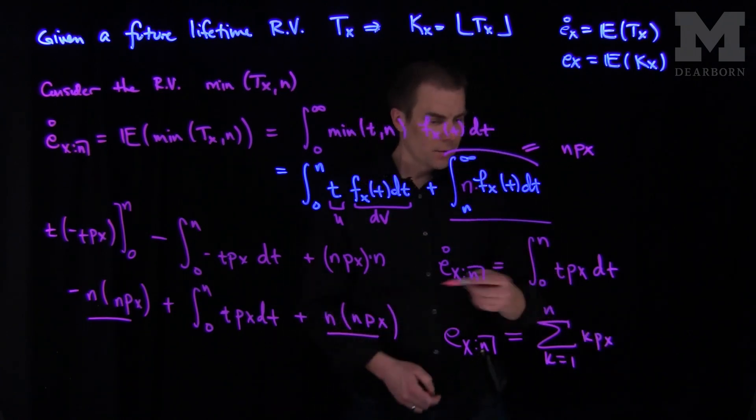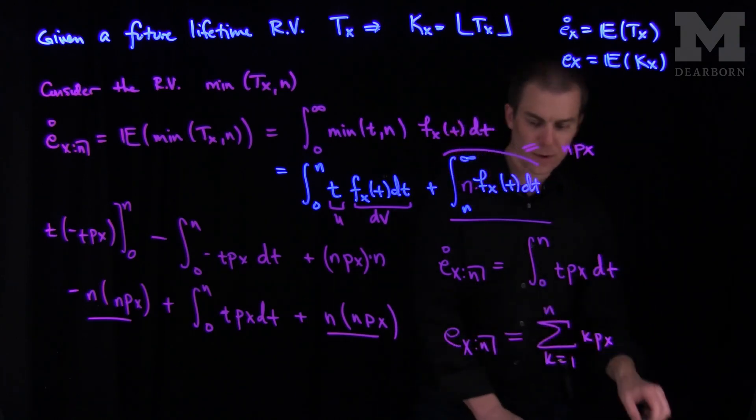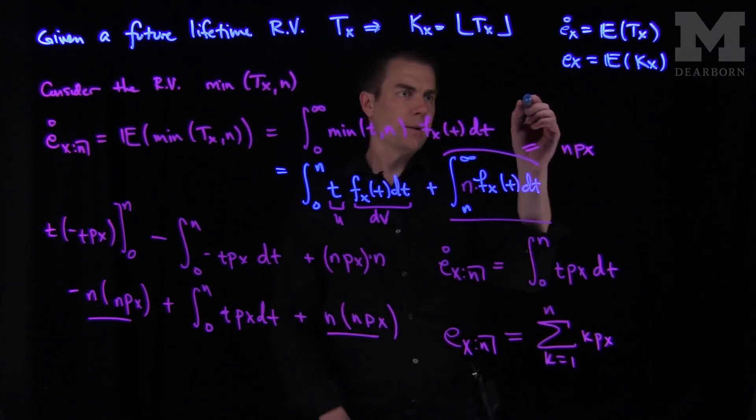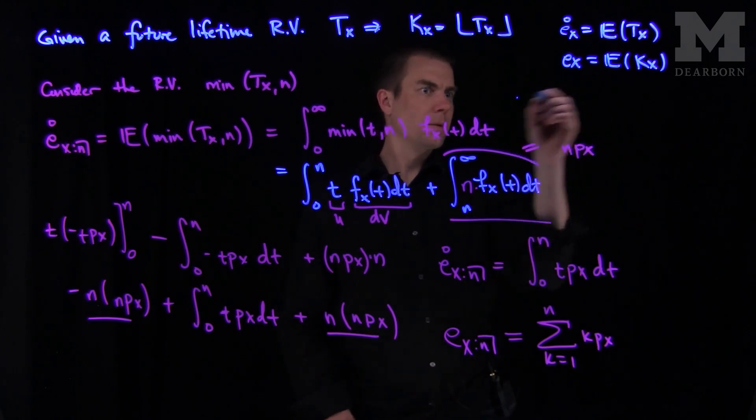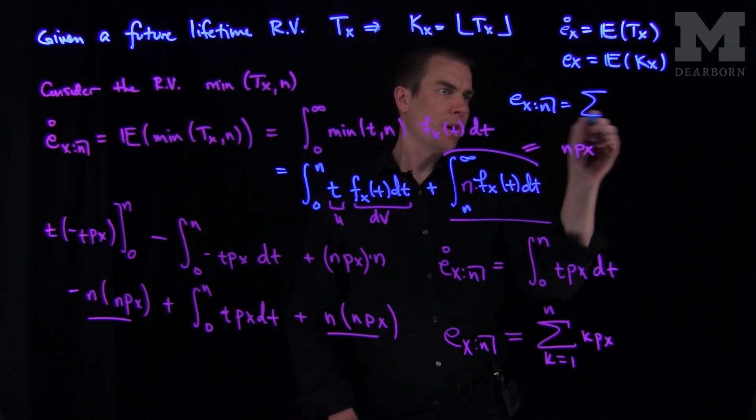And then we have to account for the fact that we have a term over here. So if we do this, if we had ex n, that would be the sum k goes from zero to infinity of the minimum of k and n times k qx.